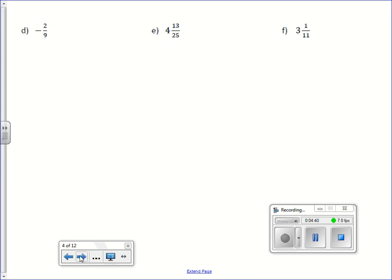Negative 2/9. 9 into 2, 0 times. 9 into 20 twice, which is 18. What's happening here? Again, it's repeating. So it would be negative 0.2 repeating.